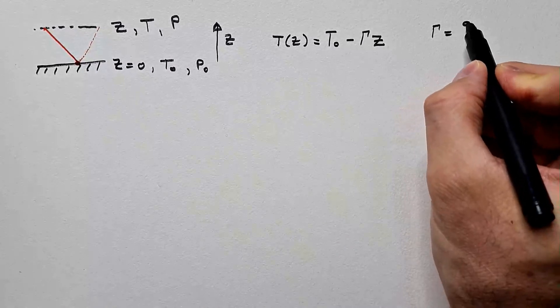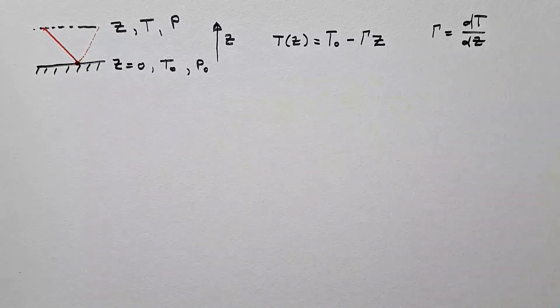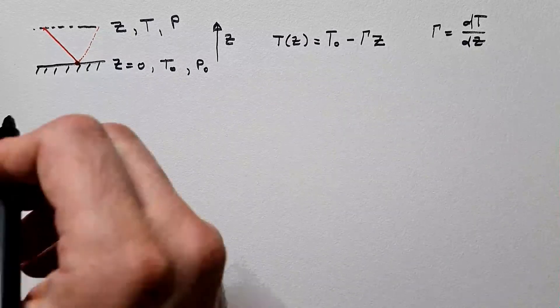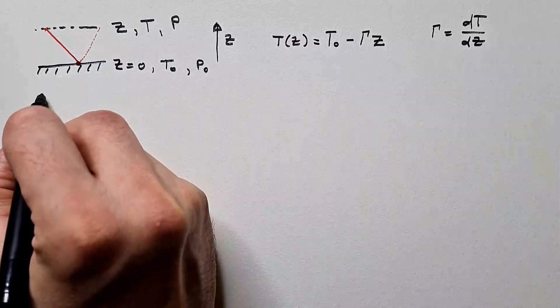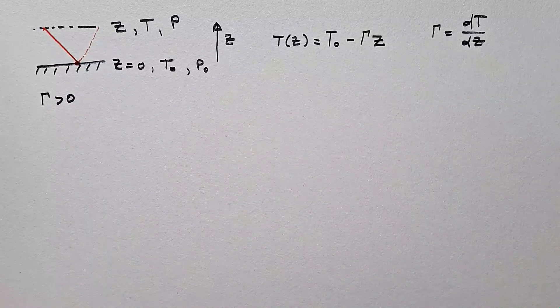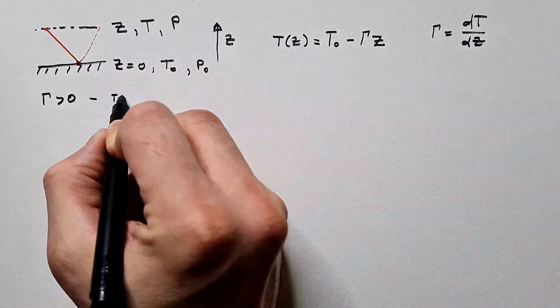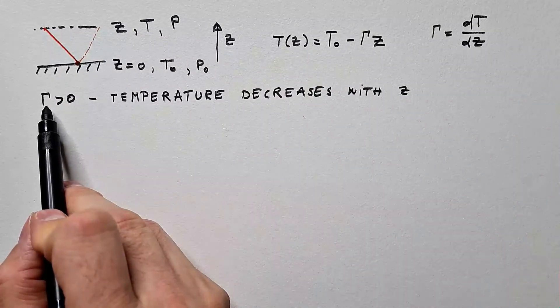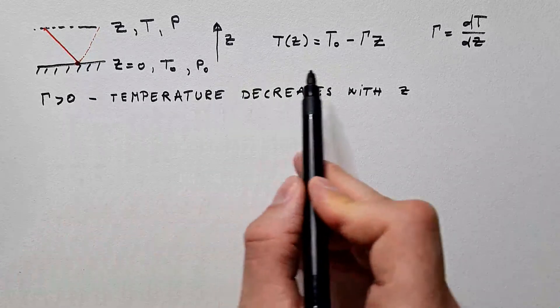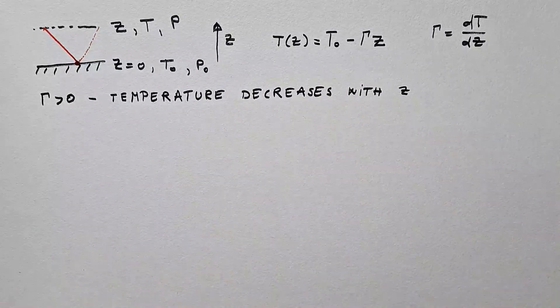γ is dT over dz. From here, we can see that if γ is positive, then temperature decreases with altitude.